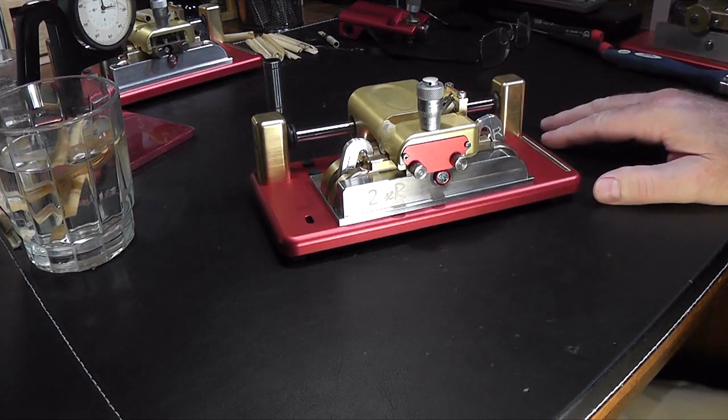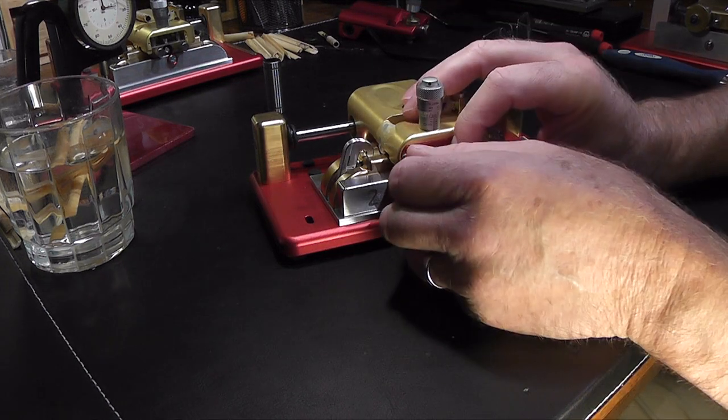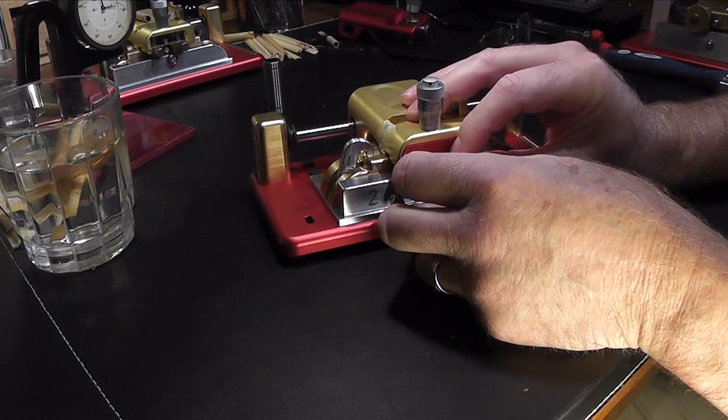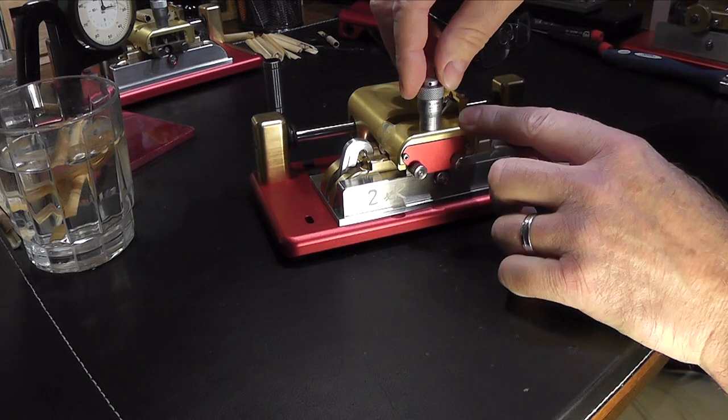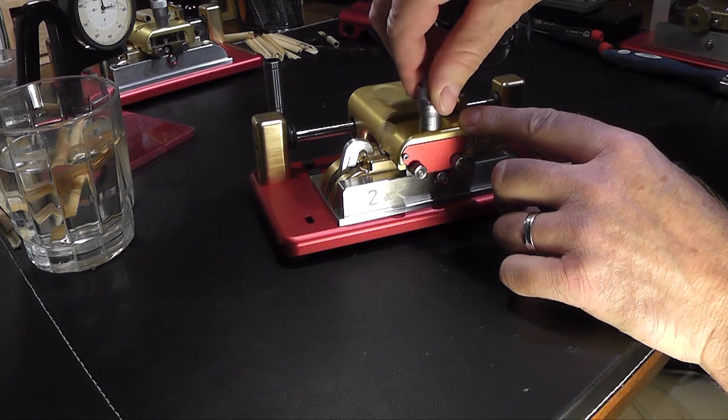I incorporated the micrometer head, and it's simply just loosen these two screws here, and then you can turn it whichever way you want. This is to make it lower, this is for higher.